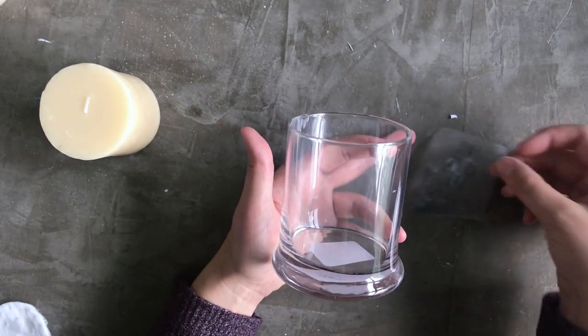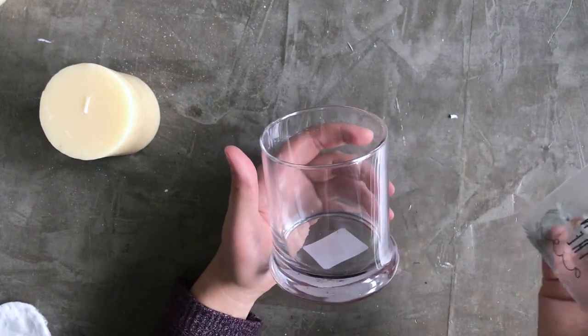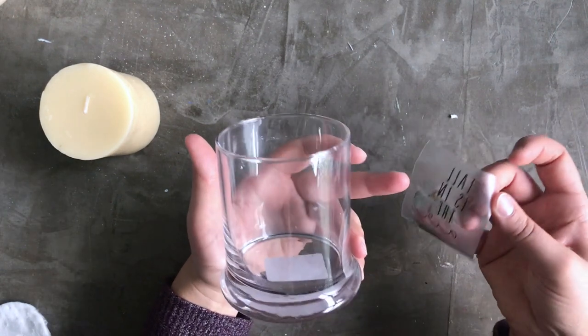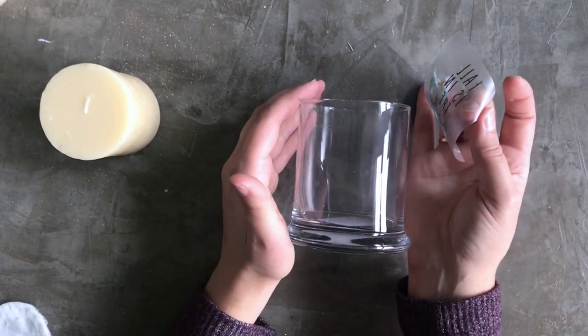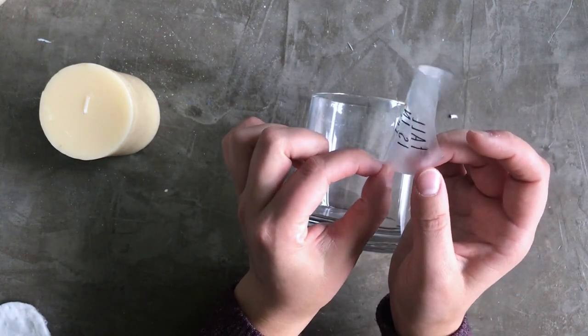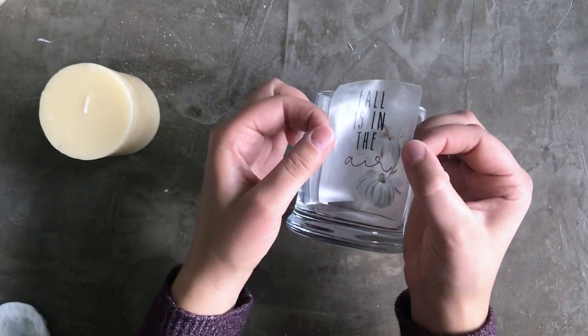Okay, now I'm going to just take my contact paper, and the sticky side is sticky again because I've let it dry. And I want to place this as evenly as possible.